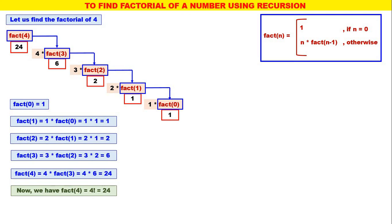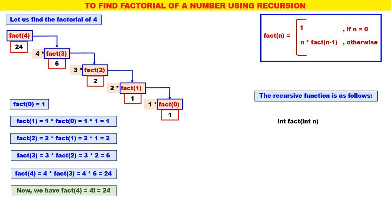I think this is quite simple. In the recursive manner we find the factorial of a given number. The recursive function is also given as follows: int fact(int n) — if n is equal to 0, return 1; otherwise, return n into fact of n minus 1, the same function fact with the parameter n minus 1. That is all the recursive function for factorial. Factorial is a very easy example to understand recursion, and the recursive function is also quite simple and straightforward.